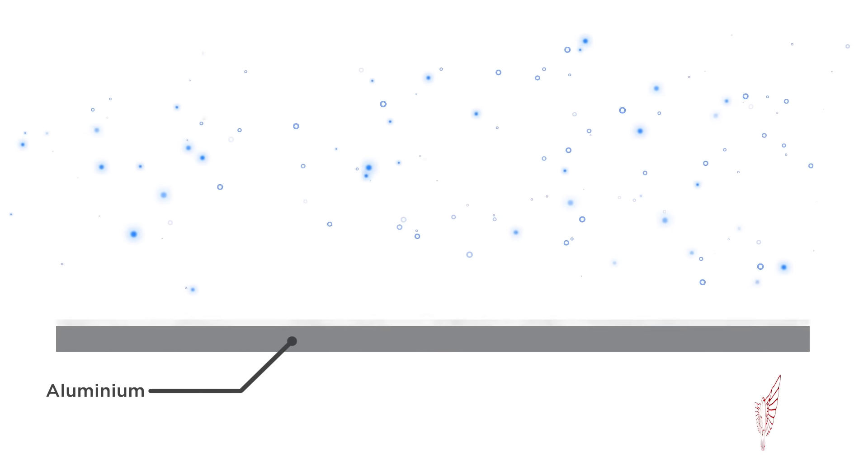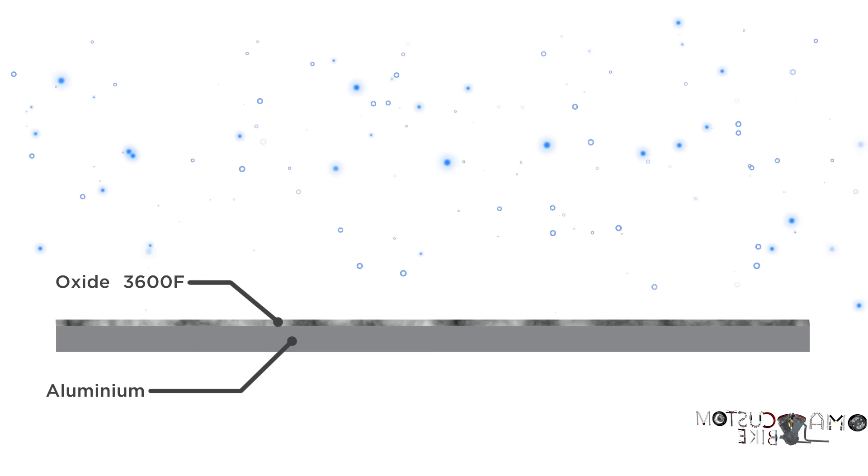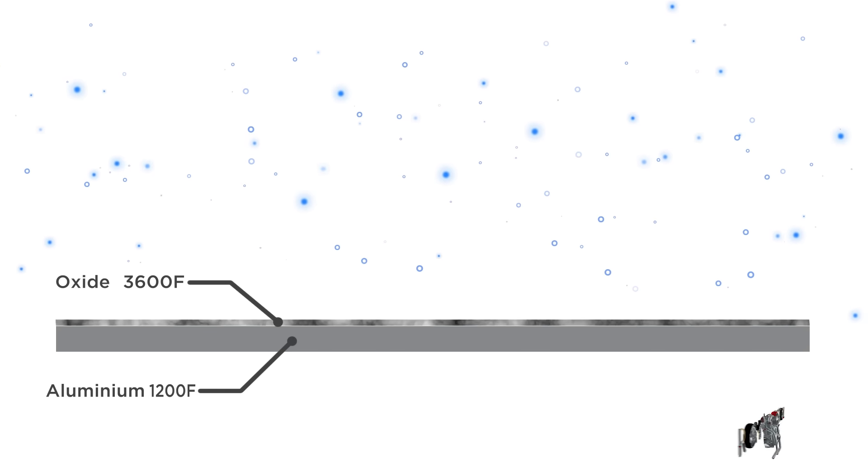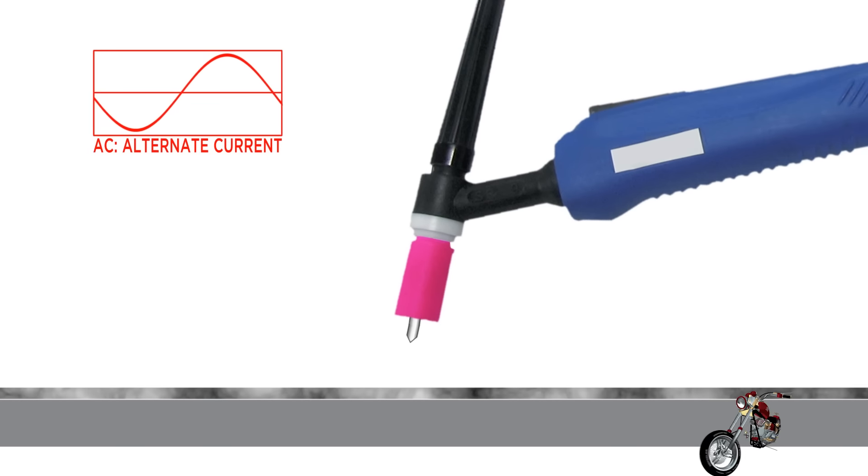An AC DC TIG welder is best suited for aluminum welding. When exposed to oxygen aluminum forms an oxide layer that melts at a much higher temperature than the aluminum itself. It's called 3,600 degrees Fahrenheit versus the 1,200 degrees Fahrenheit of the base material. To solve this problem AC welding has two cycles.